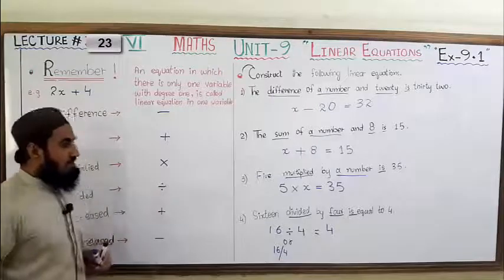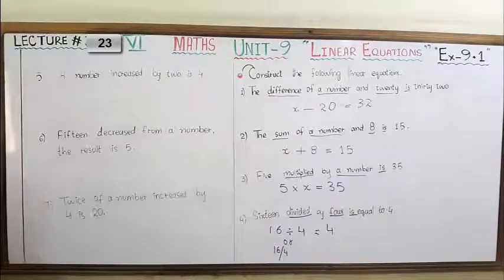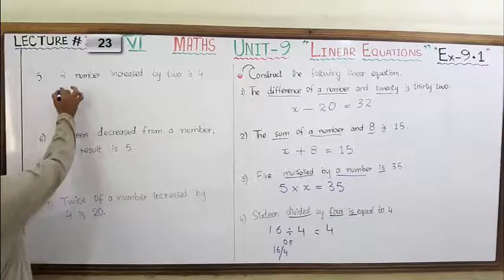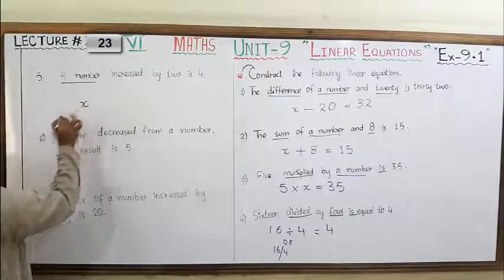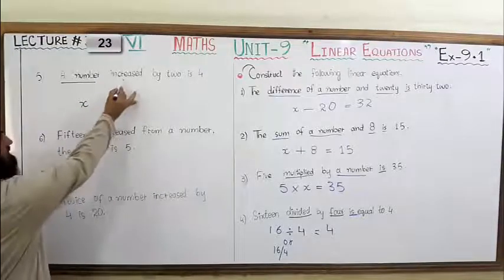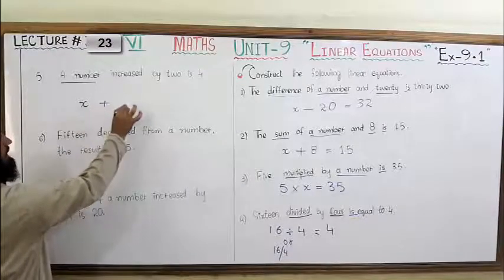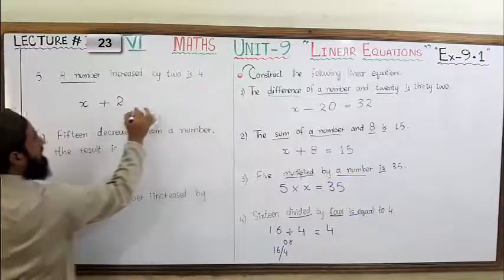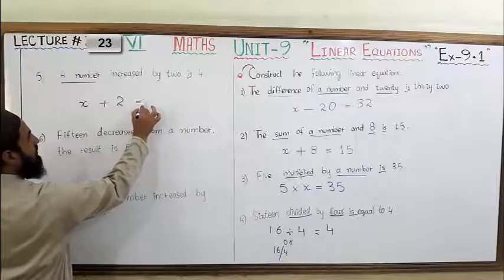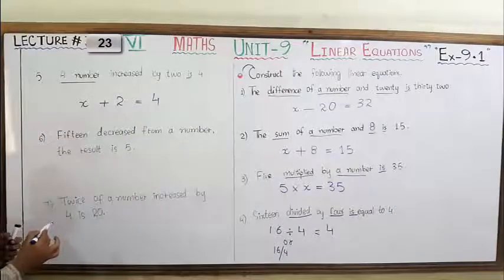Paanchwa statement: 'A number increased by 2 is 4.' Number kya hai? Unknown hai, humein maloom nahi. 'Increased' — wo plus ki sign ke liye hai. 'By two' — two ke saath. 'Is' — equal to ki sign ke liye use ho raha hai. 'And four' — to yeh statement construct ho gayi linear equation mein: X + 2 = 4.